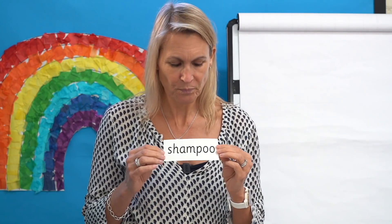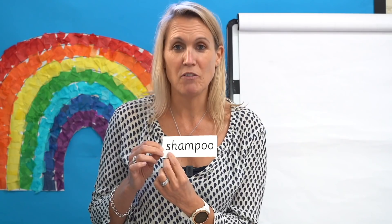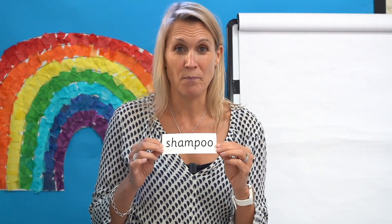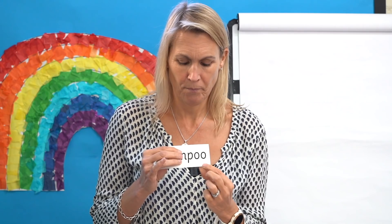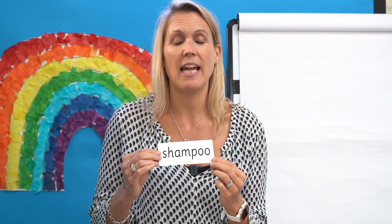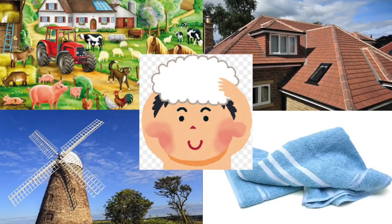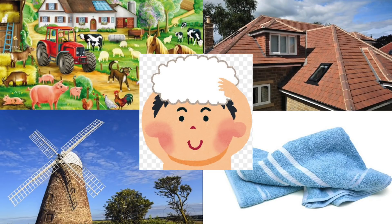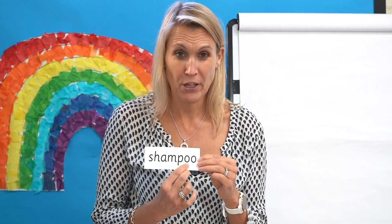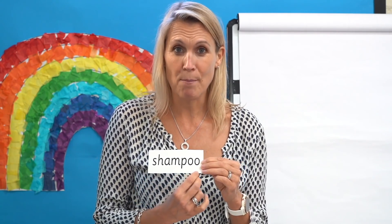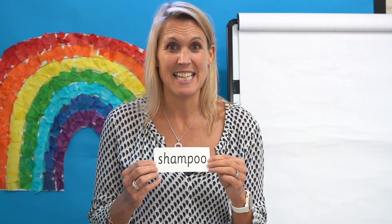Try this one. Can you spot the digraphs? Yes, we've got SHH and we've got OO. Let's check — read it together: SH-A-M, sham, P-OO, poo. Shampoo. Here is the picture of the shampoo. Did you get it right? Excellent.